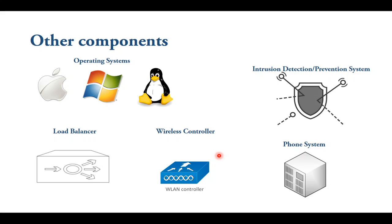You have intrusion detection and prevention systems (IDS/IPS). This can be a standalone device or a module on the firewall. These systems will monitor traffic and detect any abnormal behavior or malicious traffic. If they see anything malicious, they will block it or alert the system admin. You can also see phone systems, which manage the VoIP phones.